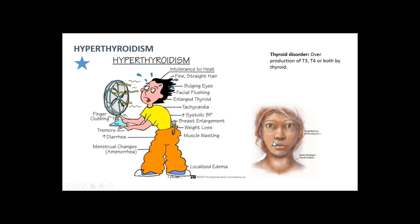The flip side is hyperthyroidism — metabolism revved up. Symptoms include intolerance to heat, bulging eyes, facial flushing, enlarged thyroid, tachycardia, increased systolic blood pressure, weight loss, diarrhea, tremors, and finger clubbing. This is an overproduction of T3 and T4, or both, by the thyroid.